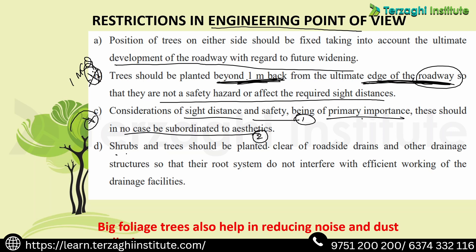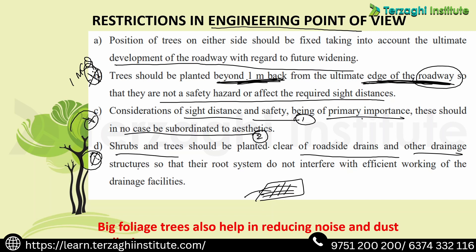Next, shrubs and trees should be planted clear of roadside drains, because the drainage purpose should not be interfered with — roots or branches should not block drains. Also, big foliage trees help in reducing noise and dust pollution.